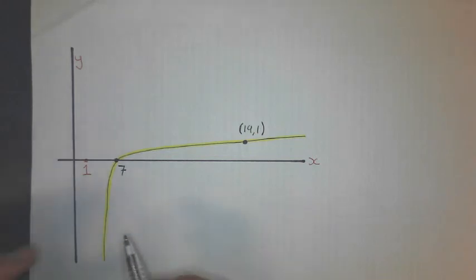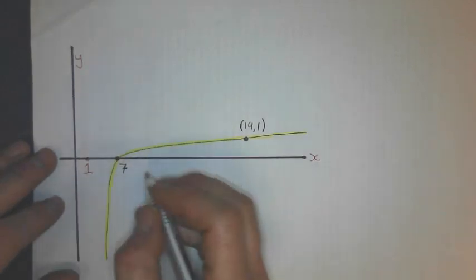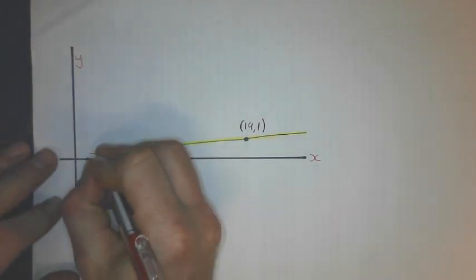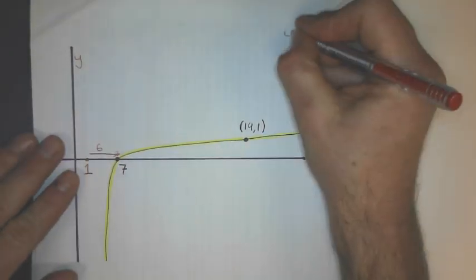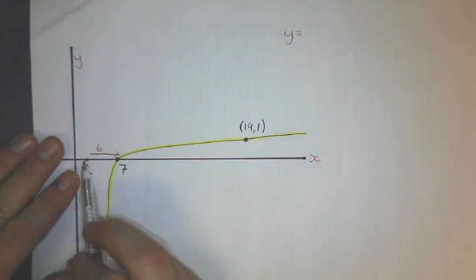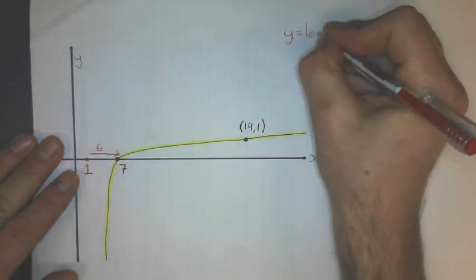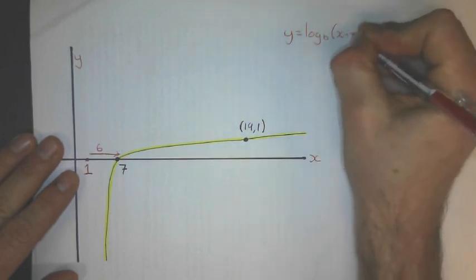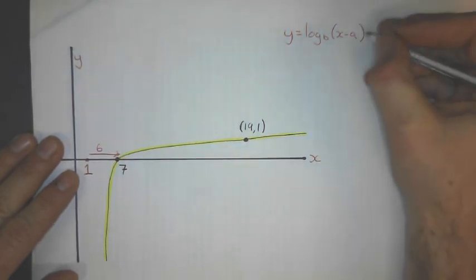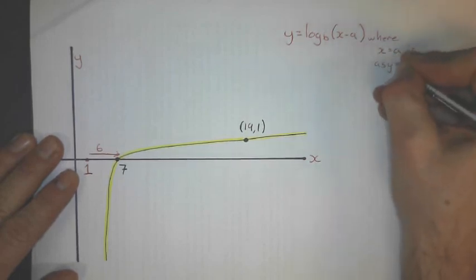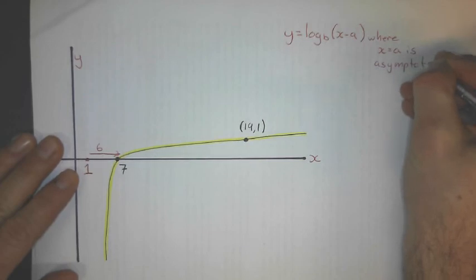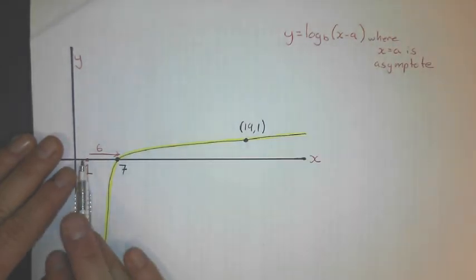Okay, my next example. There's been a horizontal shift because it doesn't go through 1 on the x-axis. It goes through 7. So I can tell that it's gone over 6 units. And if this is the case, if there is some shift, then the general form of something that's not going through 1 on the x-axis is y equals log with base b of x minus a,